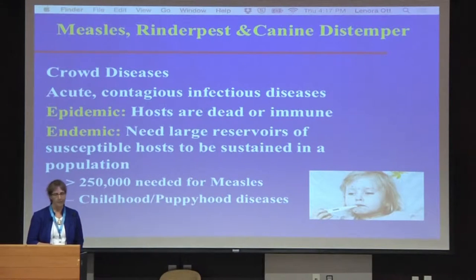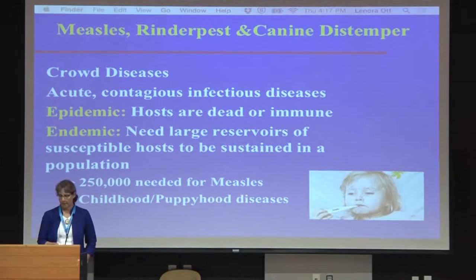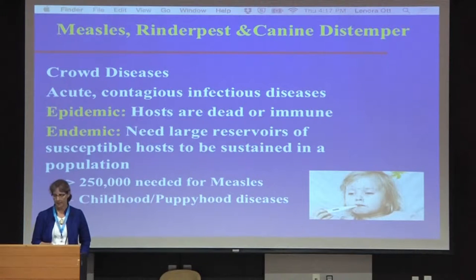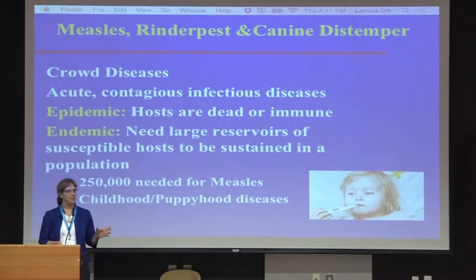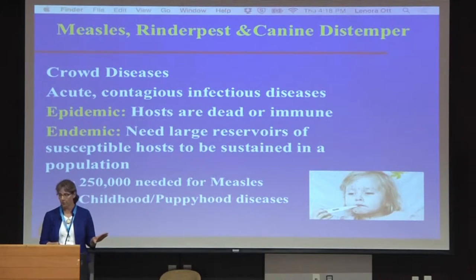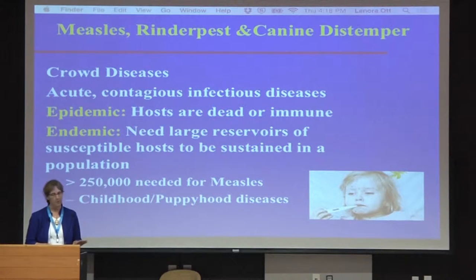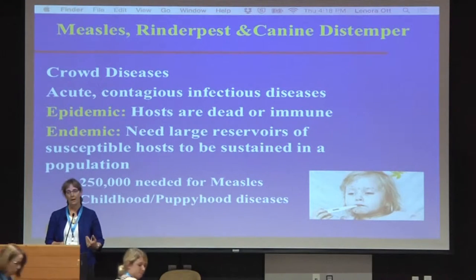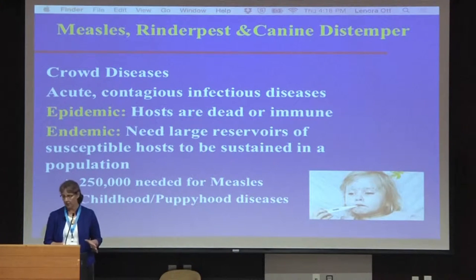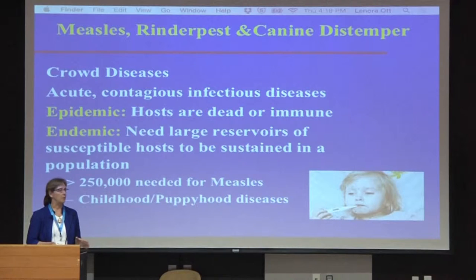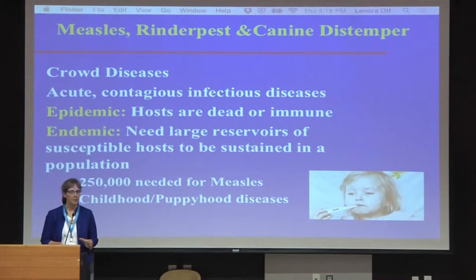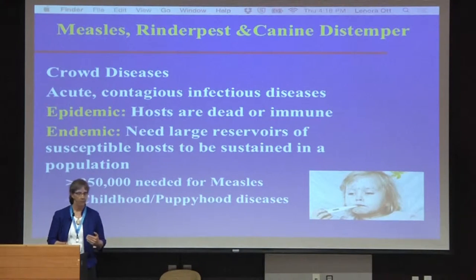Measles, rinderpest, and canine distemper have a few features in common. They're crowd diseases — you need a lot of animals to maintain these as endemic infections. They start as acute contagious diseases, and if the naive host gets it, it's dead or it's immune. In order to be maintained in a population, you need a large number of susceptible hosts. That's why they evolved into what we call childhood diseases. For measles, you need about 250,000 people to maintain the virus as an endemic childhood disease.